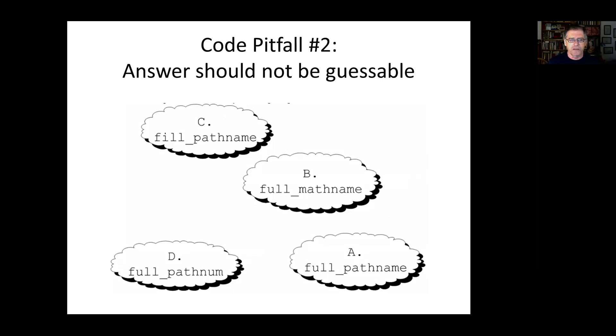Another possible problem is that you can guess the answer to the task without actually looking at the code. In this example, the task was to recall a variable name from the code we just saw. But let's look at the given options. This variable name has a verb instead of a noun, so it's most probably a function name and not a variable name. This variable includes the strange word math name, and this one has the strange word path num. Both of these words are unreasonable, so these two variable names also do not make much sense. Which leaves us with only one option, which is a reasonable variable name, full path name. And this is indeed the correct answer. And we could guess that without knowing what the code was.